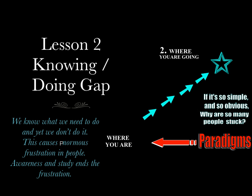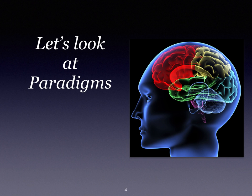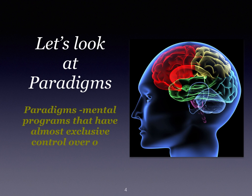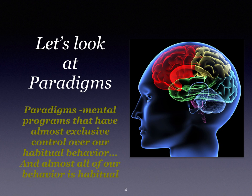When that happens, it's all because of the paradigms, the paradigms that we hold in our subconscious mind. If we look at the paradigms, paradigms are mental programs that have almost exclusive control over our habitual behavior. And almost everything we do in life is habitual. If we don't know why we're doing things and we just do them automatically, it creates enormous frustration for us.